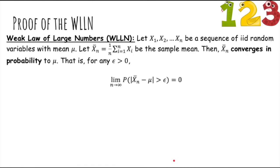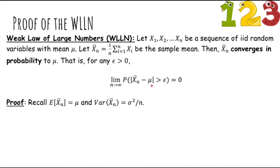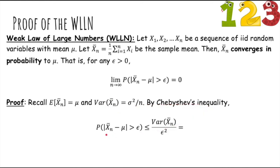Now let's use it to prove the weak law of large numbers. The weak law says that if x1 through xn are a sequence of i.i.d. random variables with mean mu, and x-bar-n is the sample mean, then x-bar-n converges in probability to mu — as n grows to infinity, the probability that the sample mean is more than epsilon away from the true mean goes to zero. The expectation of the sample mean is mu and the variance is sigma squared over n. By Chebyshev's inequality, the probability that the sample mean differs from the true mean by more than epsilon is upper bounded by sigma squared over n divided by epsilon squared. This goes to zero as n grows to infinity, proving the weak law of large numbers.